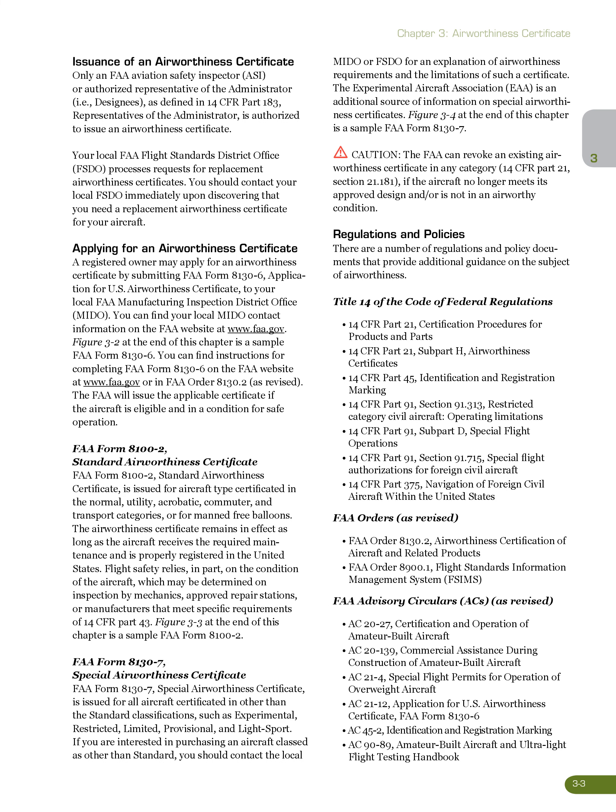FAA Orders, as Revised: FAA Order 8130.2, Airworthiness Certification of Aircraft and Related Products; FAA Order 8900.1, Flight Standards Information Management System. FAA Advisory Circulars, ACs, as Revised: AC 20-27, Certification and Operation of Amateur Build Aircraft; AC 20-139, Commercial Assistance During Construction of Amateur Build Aircraft; AC 21-4, Special Flight Permits for Operation of Overweight Aircraft; AC 21-12, Application for U.S. Airworthiness Certificate, FAA Form 8130-6; AC 45-2, Identification and Registration Marking; AC 90-89, Amateur Build Aircraft and Ultralight Flight Testing Handbook.